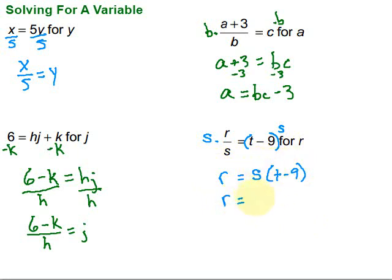Remember, s times t. So that would be st. And then s times negative 9 would be minus 9s. So there, we're solved for r.